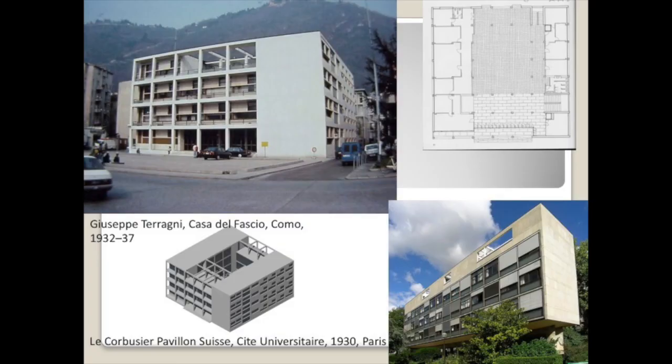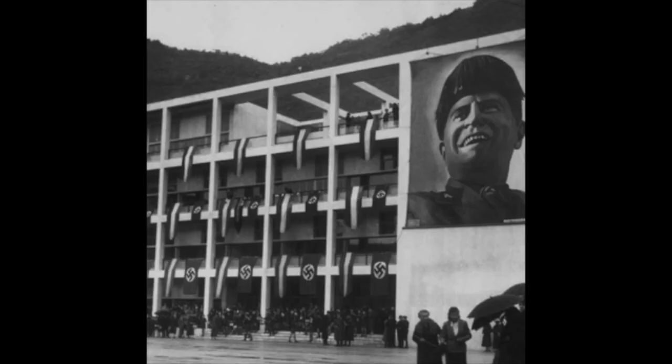The Casa del Fascio was built as the headquarters — the local headquarters — for the fascist party. Interestingly, it's built by one of Group 07, one of the proclaimed modernists. Note that this is the same individual who authored the treatise you are reading. Think about how this building meets the needs of a totalitarian regime in terms of its propaganda as well as its meeting spaces.